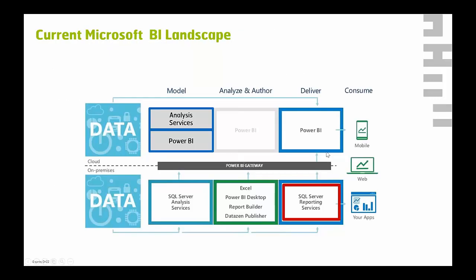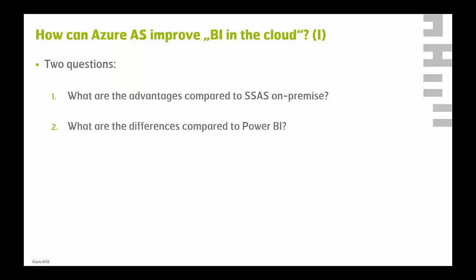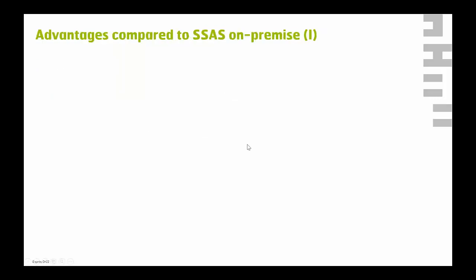The current Microsoft BI landscape covers a hybrid solution combining cloud and on-premises approaches. On-premises you have SQL Server Analysis Services as your typical modeling solution. In the cloud you have Azure Analysis Services standalone and Power BI as your two opportunities to create and maintain models. But how can Azure Analysis Services actually improve BI in the cloud? There are two questions to answer: why should we use Analysis Services in the cloud instead of on-premises, and what are the differences compared to Power BI?